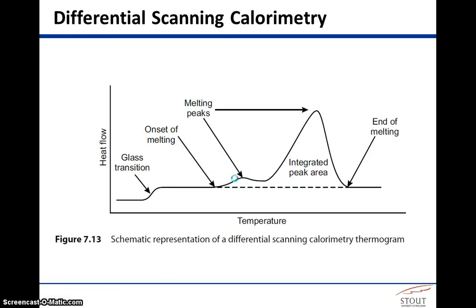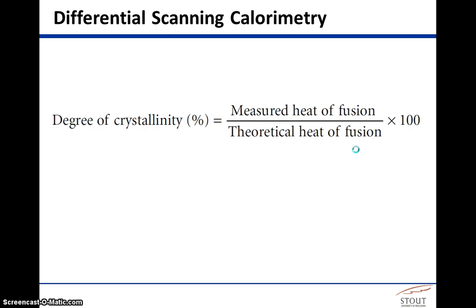Another method is DSC, where you can observe various transitions. We have the glass transition temperature, and remember that exotherms can be plotted either up or down, so you always have to orient your mind to the plot you're working on. This particular sample actually has two different melting peaks — it must be a biphasic material, a block polymer, or a blend of some sort. But if we take our melting peak, we can integrate the area under that peak and get quantitative information about the degree of crystallinity.